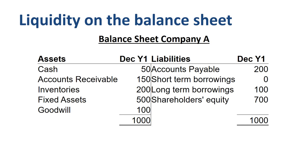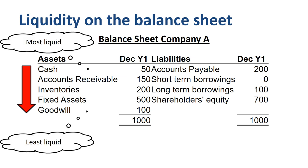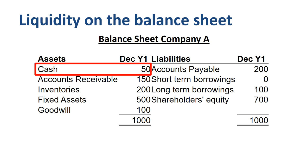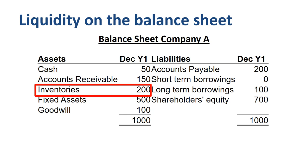Let's look at liquidity on the balance sheet. For reporting in the US, the assets of a company are listed from most liquid at the top to least liquid at the bottom. Cash is very liquid — in most cases you can use it immediately to pay your obligations. Accounts receivable are very close to cash; once the customer pays you, you can use that cash to pay your own bills. Inventory is still reasonably liquid, but you will have to sell it first and then collect the receivable for inventory to turn into cash.